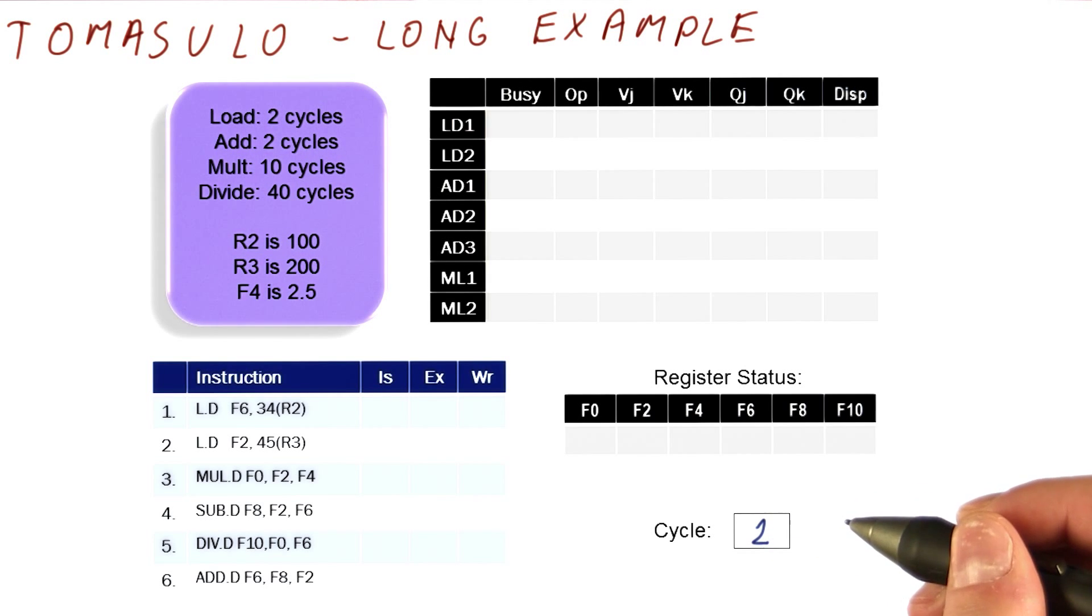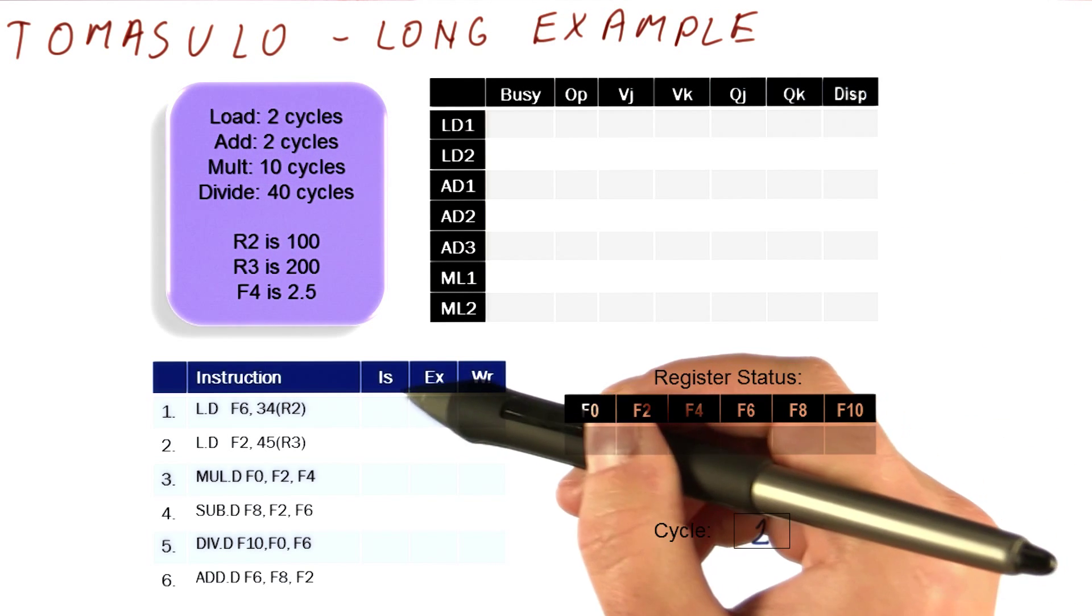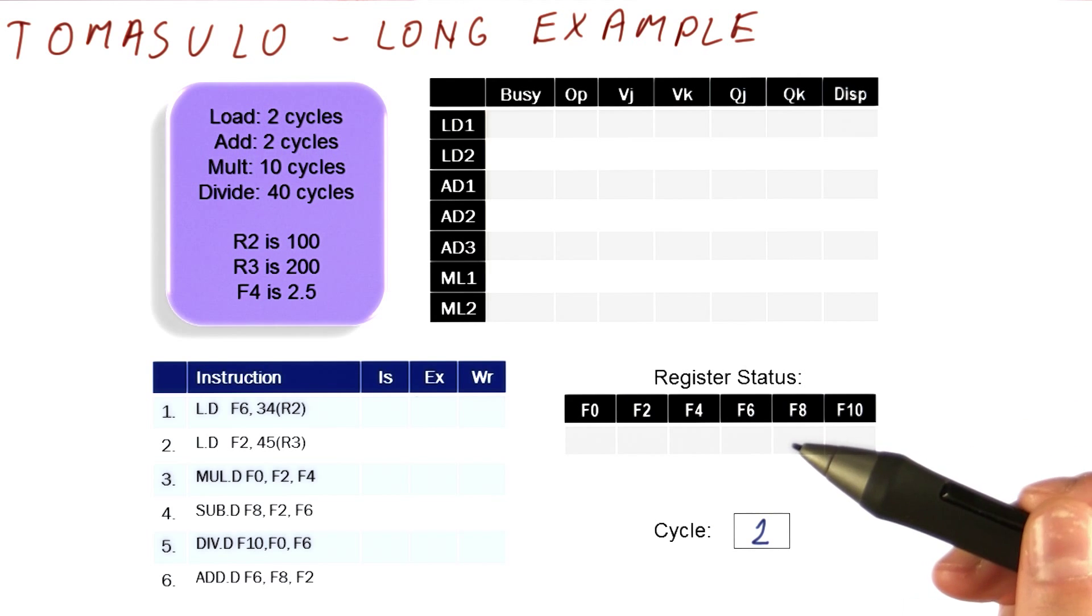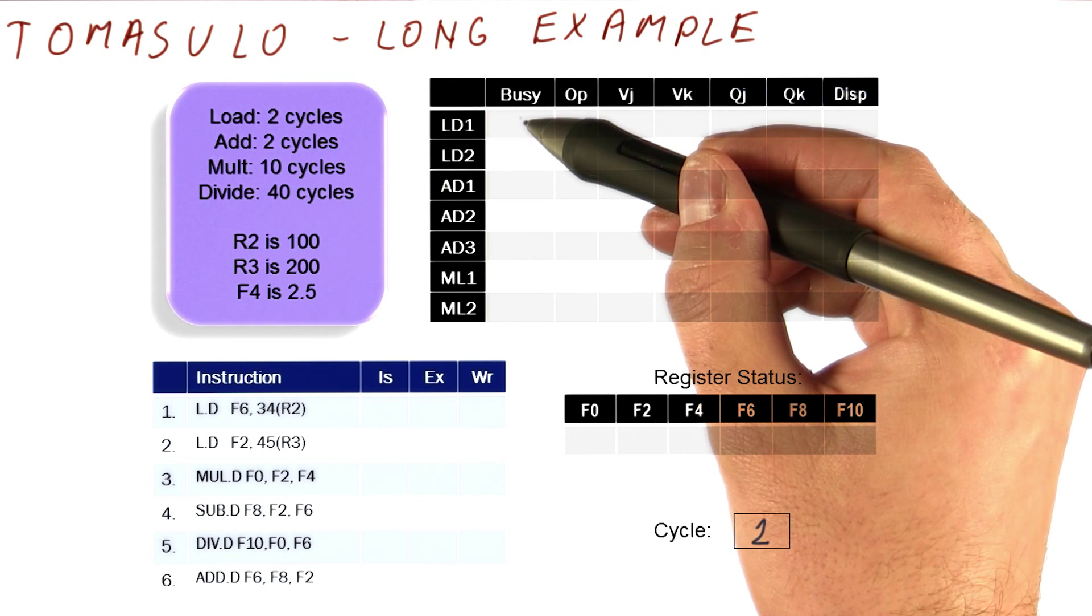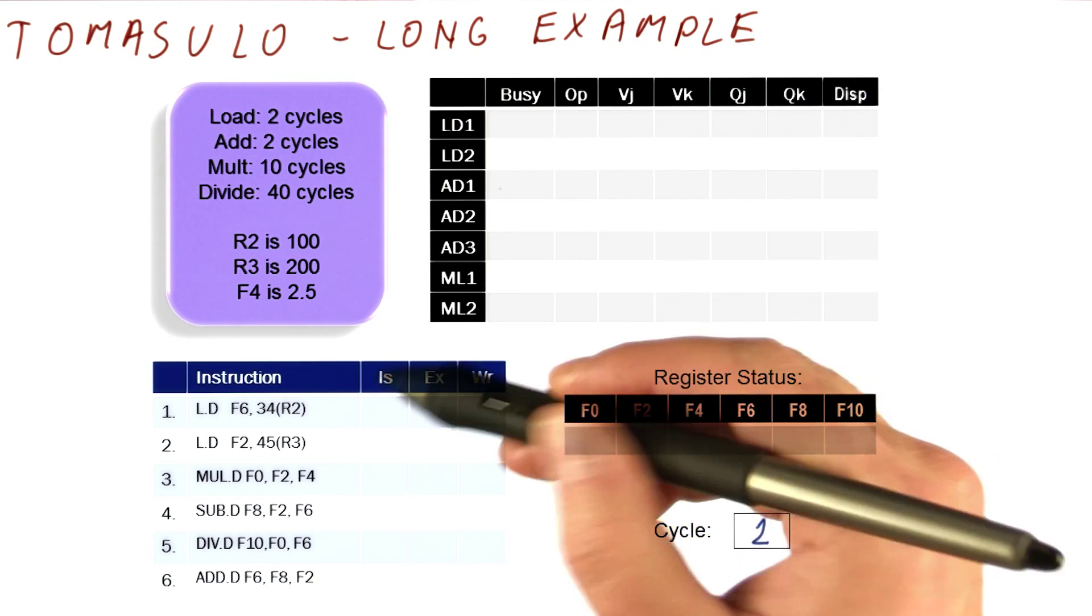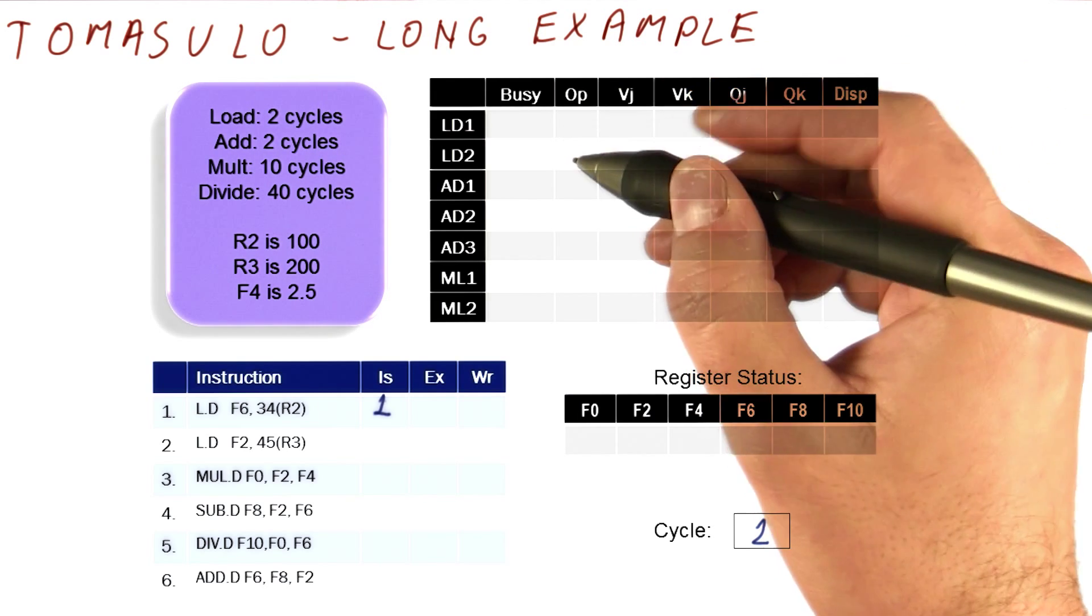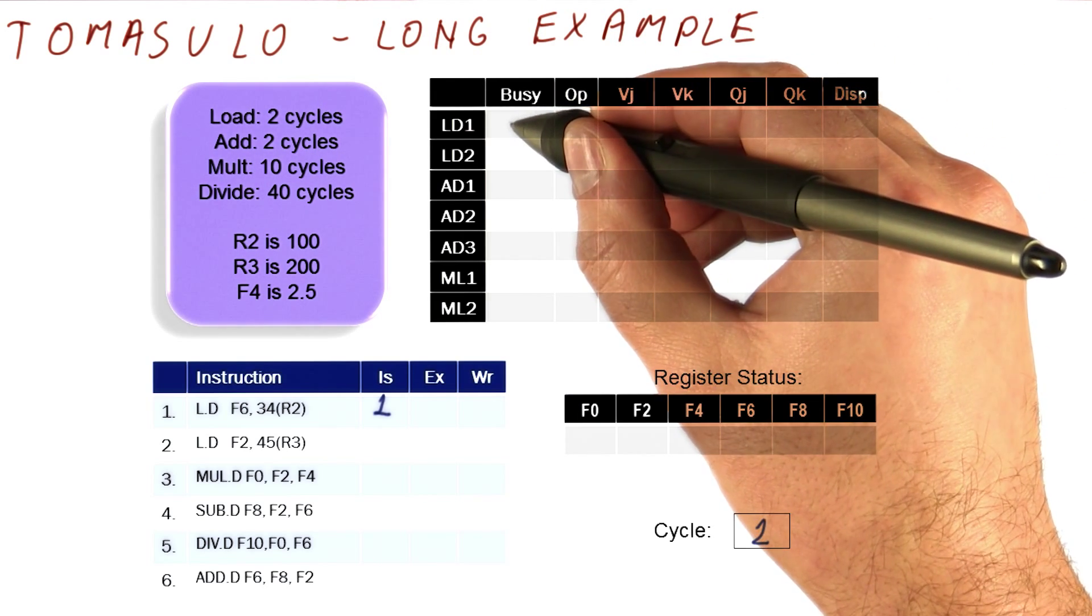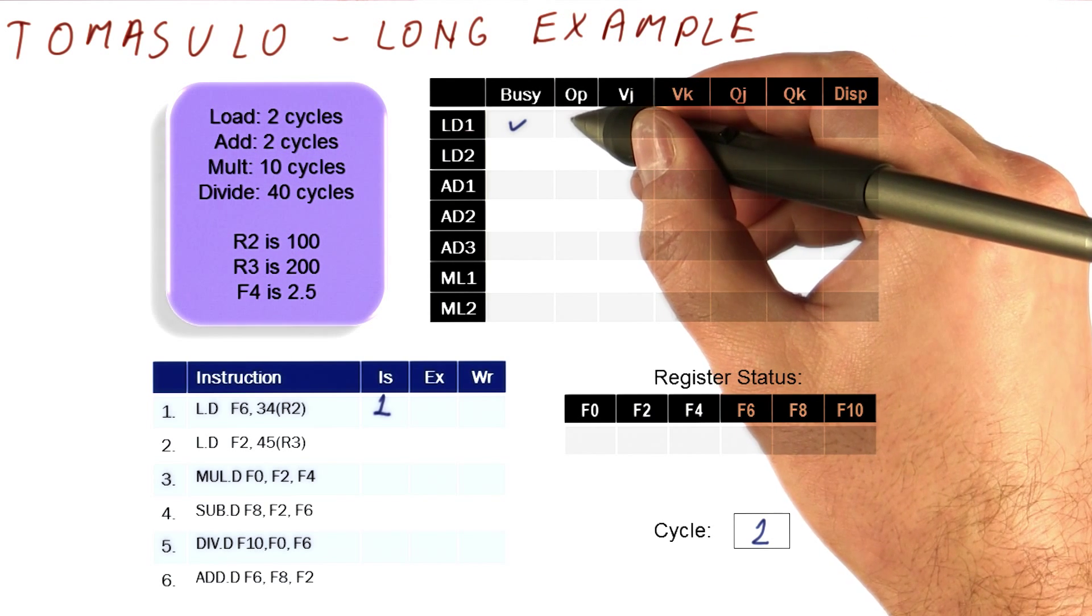Let's begin with the very first cycle, cycle one. In this cycle, there is nothing to dispatch and nothing to write, of course. So the only thing that we really need to be concerned with is issuing an instruction. The load will look at the reservation stations and the load store queue in this case and see that there is an empty space there, so we can issue. So we will mark that this instruction gets done in cycle one as far as issue is concerned. Now we have a busy load store queue entry. The operation is a load.